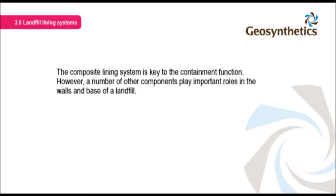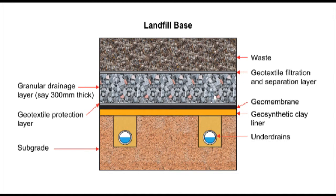The composite lining system is key to the containment function. However, a number of other components play important roles in the walls and base of a landfill. From the bottom up, the existing subgrade must be prepared — this involves compaction and rolling to smooth the surface — and drainage systems are installed. The GCL is then placed directly onto the compacted subgrade and the geomembrane placed on top. A geotextile layer is then placed on top of the geomembrane for protection, preventing the drainage aggregate from puncturing the geomembrane. The drainage aggregate is made up of crushed rock, usually 300 millimetres thick. A second geotextile layer on top of the drainage aggregate separates it from the waste and allows liquid to pass while preventing fine-grained material from entering the aggregate layer and clogging it.